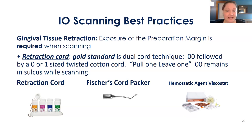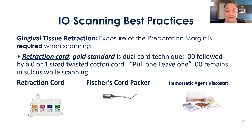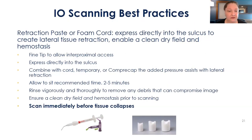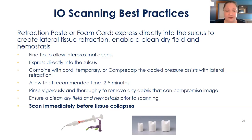Continuing with best practices: exposure of the prep margin is required when scanning. The gold standard is the dual cord technique where you pull one and leave one. Put a double zero in and then a zero or one on top — the double zero remains in the sulcus when you scan before the tissue collapses. Using a hemostatic agent like Viscostat is very helpful. When expressed directly into the sulcus, it creates lateral tissue retraction, but be mindful it's not coming out of the sulcus and compromising the view of the margin. You can also combine that method with cord, or use a temporary crown or compre cap to help with lateral retraction.